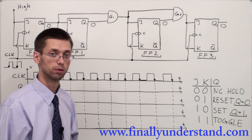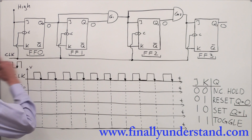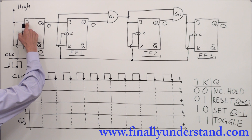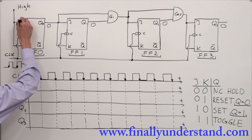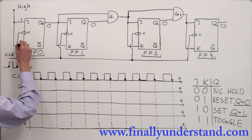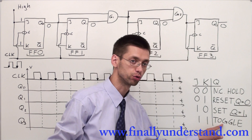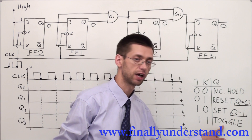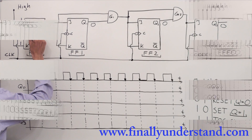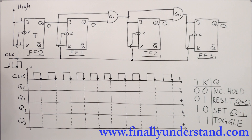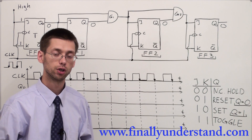Let's take a look at our counter. Flip-flop 0 has its J and K inputs connected to high, meaning J is receiving high and K is receiving high. We said that any time J and K are both high, we set this flip-flop to toggle mode. So I'm going to write T, which stands for toggle mode — this flip-flop is going to toggle when the clock pulse comes.